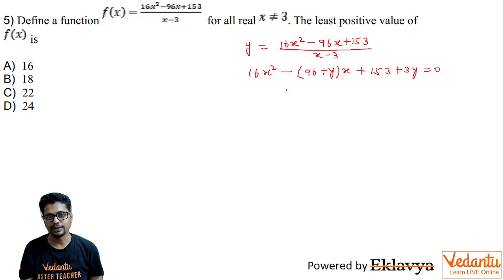So here since x is supposed to be real but not equal to 3, that's fine. You will say discriminant should be greater than or equal to 0.